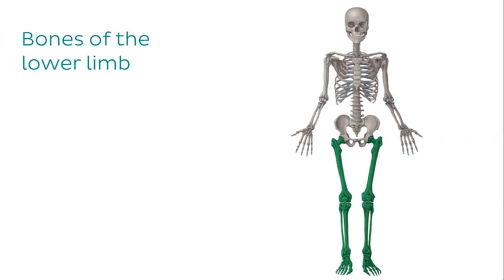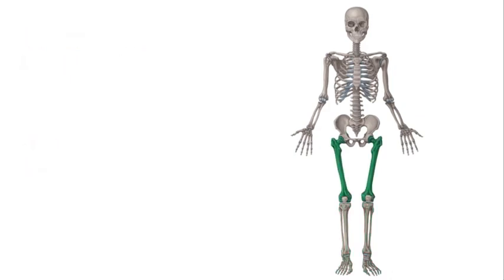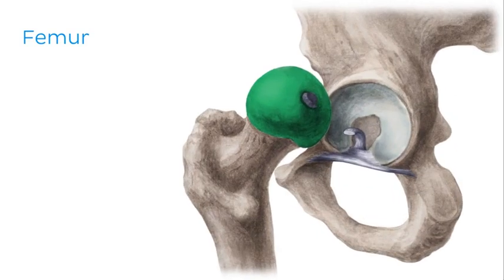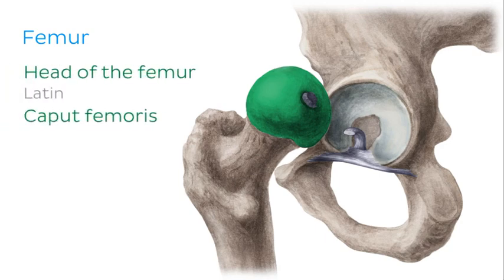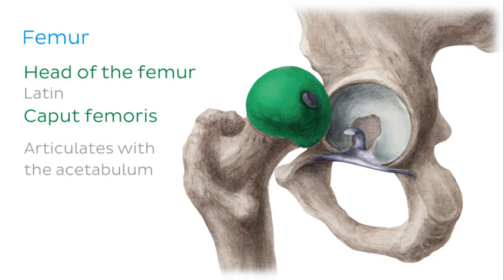The last group of bones we're going to look at are the bones of the lower limb, specifically the bones of the thigh, the leg and the foot. Like the arm, the thigh has only one bone: the femur, which is the longest bone in the human body. If we zoom in on the proximal aspect, we can see the head of the femur, which articulates with the acetabulum of the hip bone.